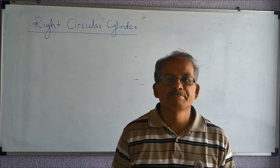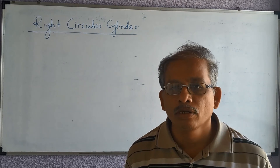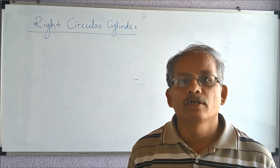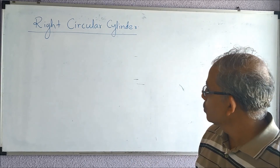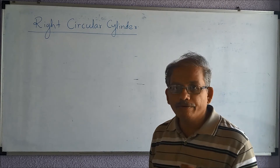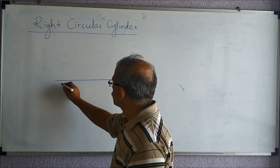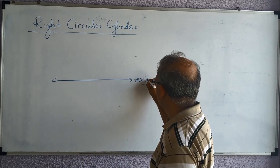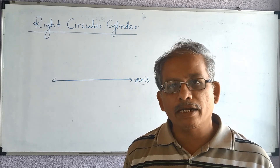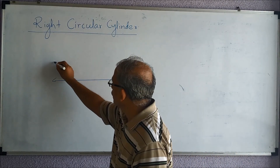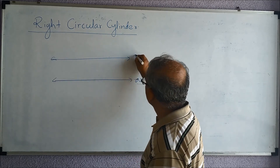Let us see the third geometrical object: the right circular cylinder. We have already seen a sphere and a right circular cone. The right circular cylinder is generated using a line called the axis. We then take another line parallel to this axis, which is called the generator.